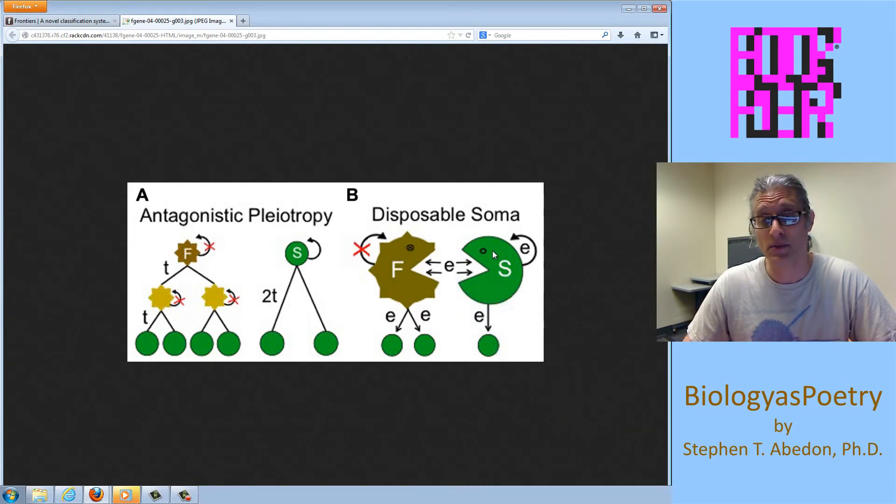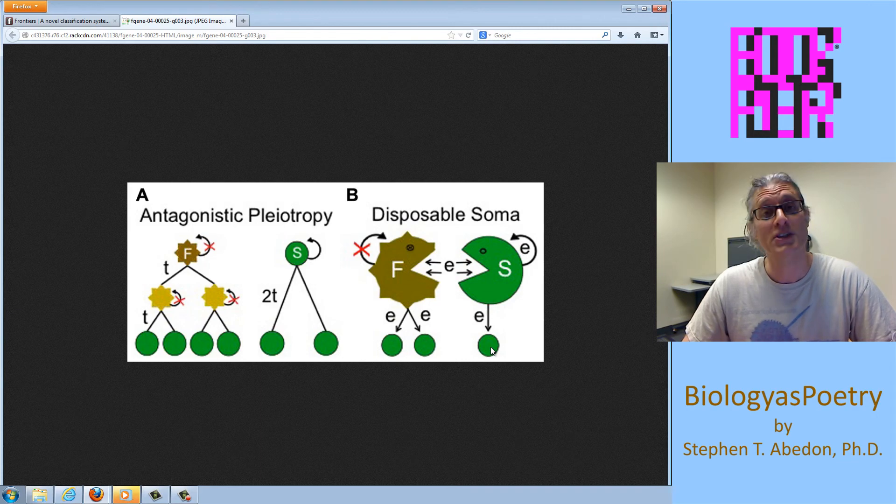It ages faster, whereas this individual is putting energy, that's what the E stands for, towards the retention, maintenance of its own body. It's able to live longer, but that energy is no longer available for the production of progeny and therefore produces fewer progeny over time.